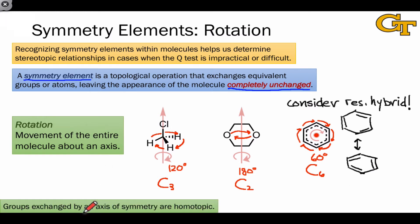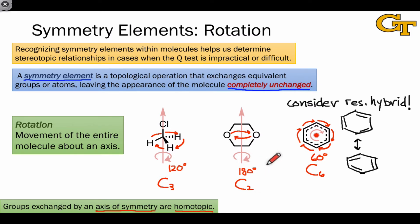The main point that benzene teaches us is that we need to consider the resonance hybrid when looking for symmetry elements — we need to consider bond lengths and angles by weighting the various important resonance contributors. For the purpose of identifying stereotopic relationships, we can say that groups exchanged by an axis of symmetry are homotopic. They're in identical spatial environments. The reason for this is that rotation is a physically allowed operation — all three of these molecules are undergoing rotations countless times per second just by virtue of having thermal energy, so the interconversions of these atoms are happening at a very rapid timescale. They're thus in equivalent environments and they behave identically.